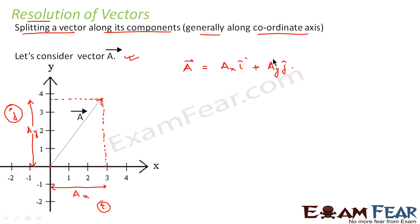From this you can verify the properties which we studied in the previous slides. So any vector a is generally represented in this way in terms of its components along the x and y axes.